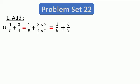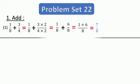Now you have converted them into like fractions with common denominator 8. So do the addition: 1 plus 6 upon 8 — add the numerators and keep the common denominator. So 1 plus 6 is 7 upon 8. The final answer is 7 upon 8.